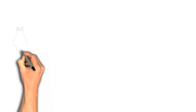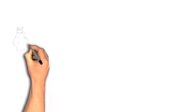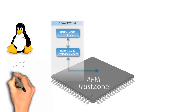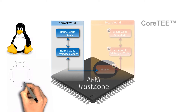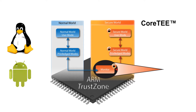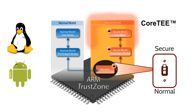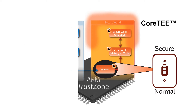Operating systems such as Linux and Android run in the normal world. Core-T runs in the Secure World and manages switching between the Secure and normal worlds. This switch is accomplished by a Secure Monitor.